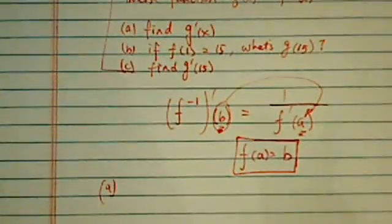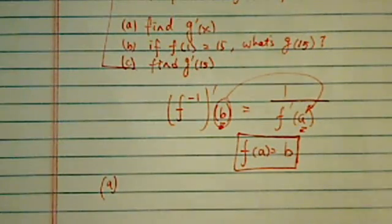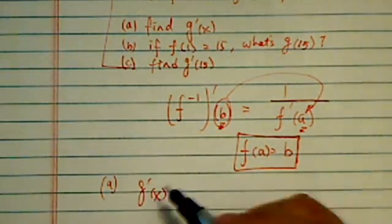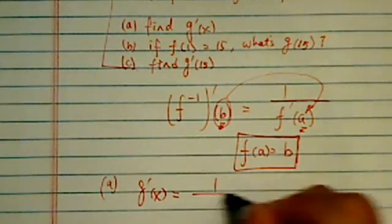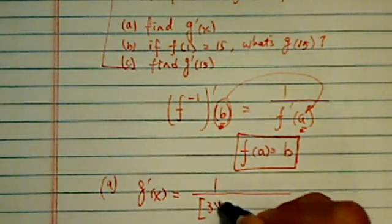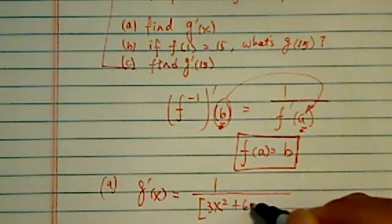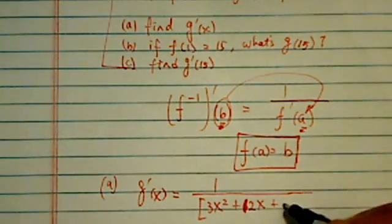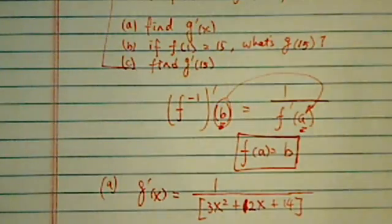Part a, we were supposed to find g'(x). g' is equal to—that's the inverse function—so it's 1 over the function derivative, which happened to be 3x² + 12x + 14. So that's the easy part.